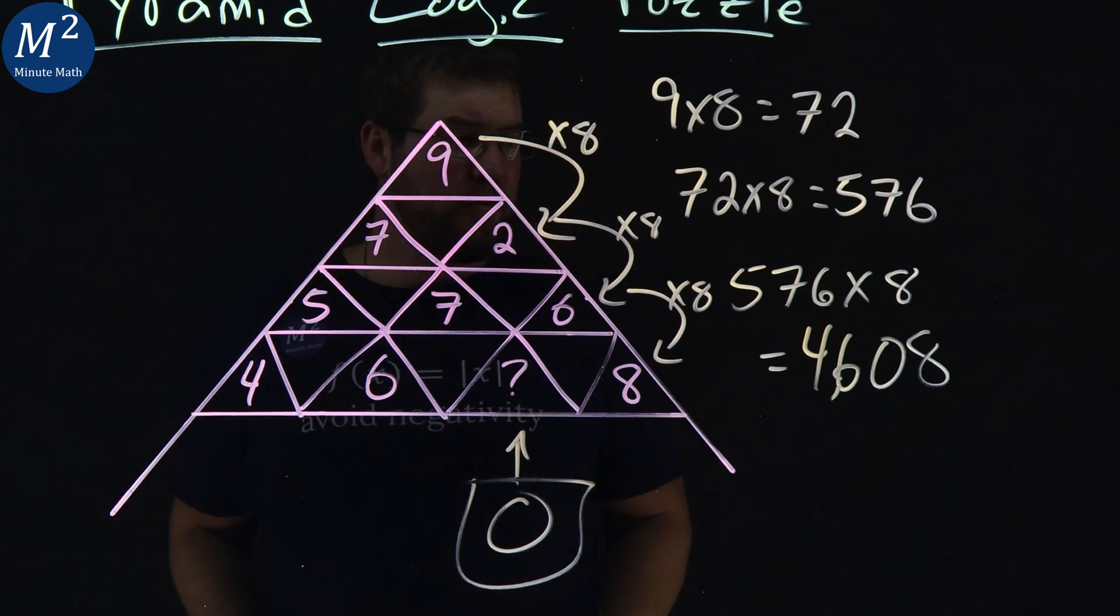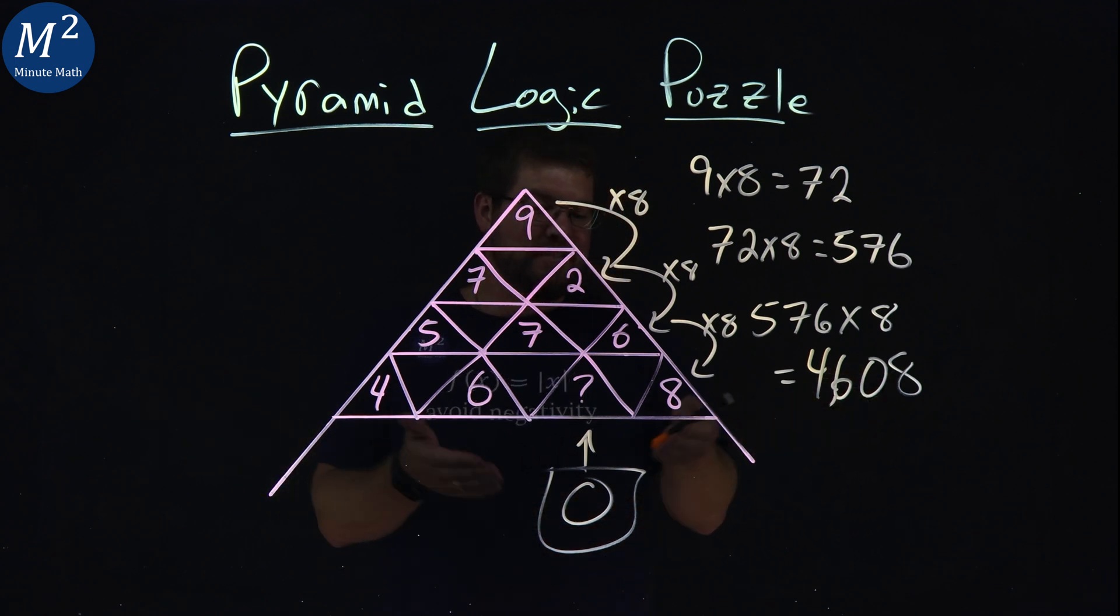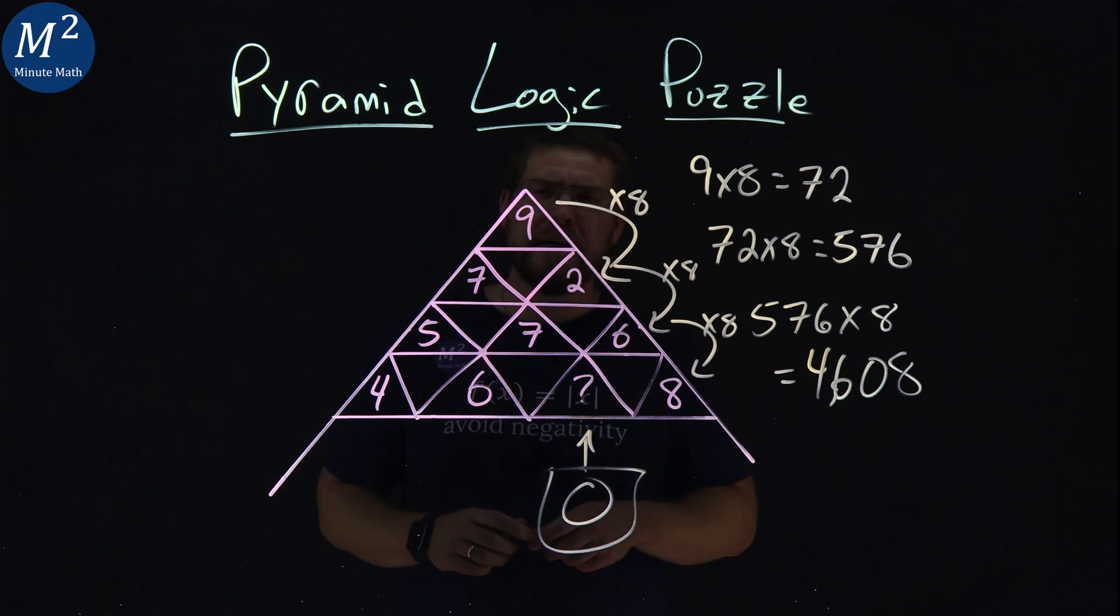So if you like zero, like this video. I hope you got the answer. Did you get 4608 and got zero for the missing number? Is there another way to get this? Let me know in the comment section below.